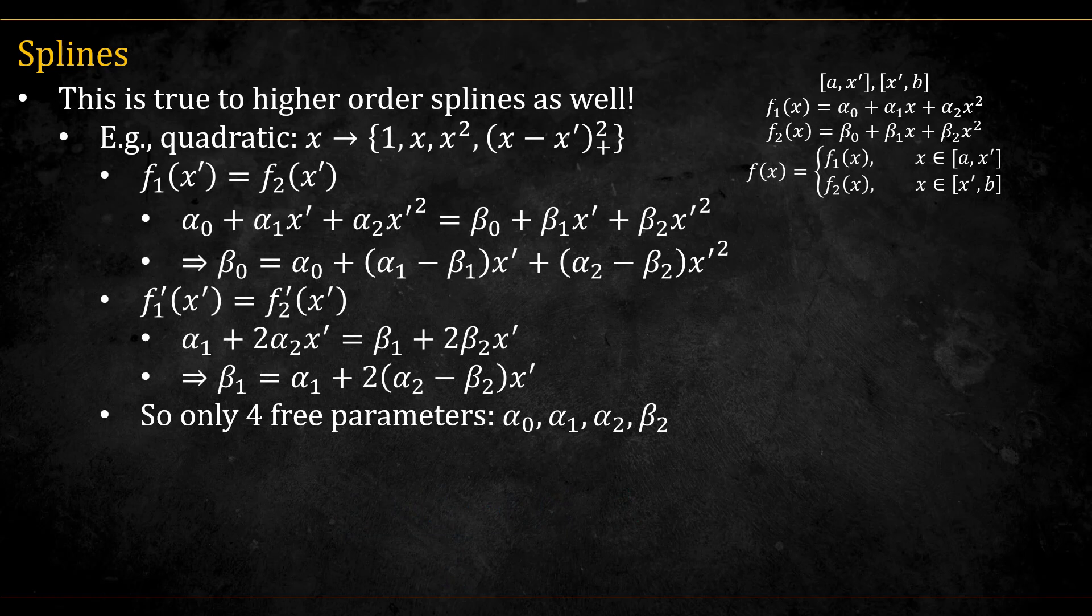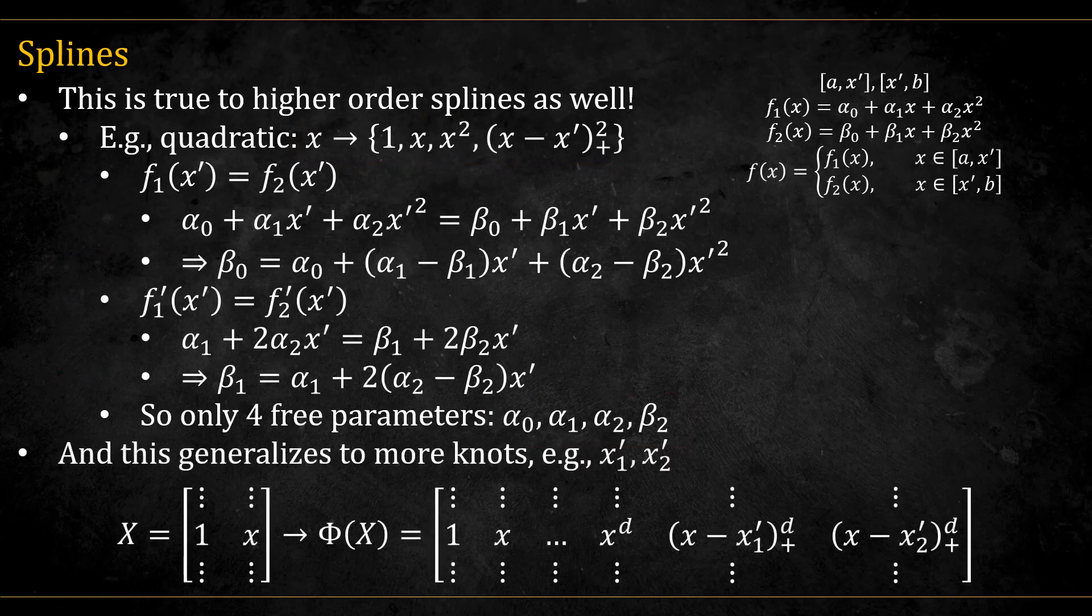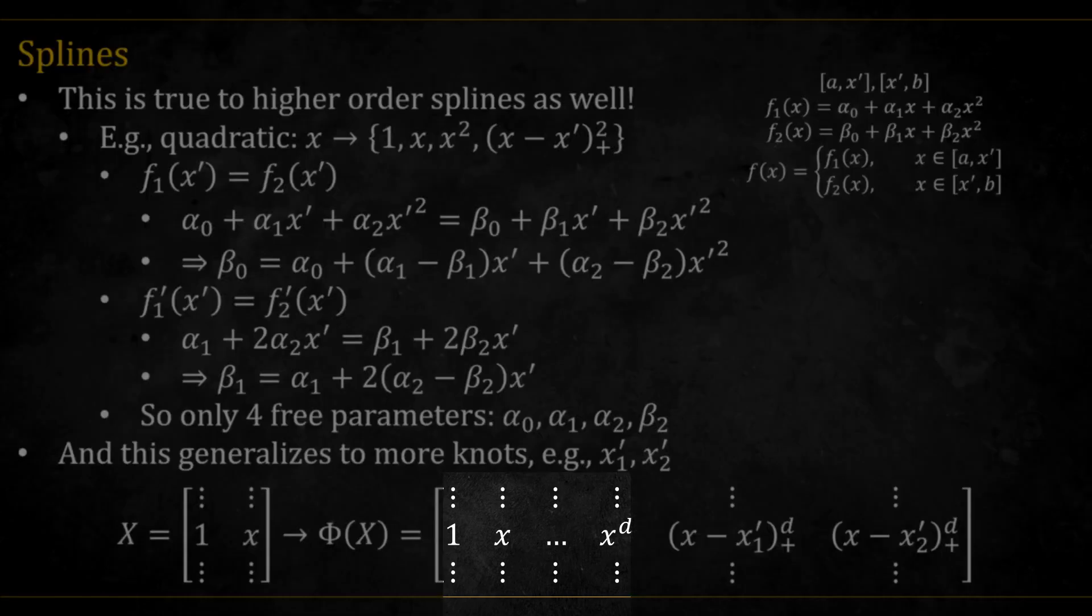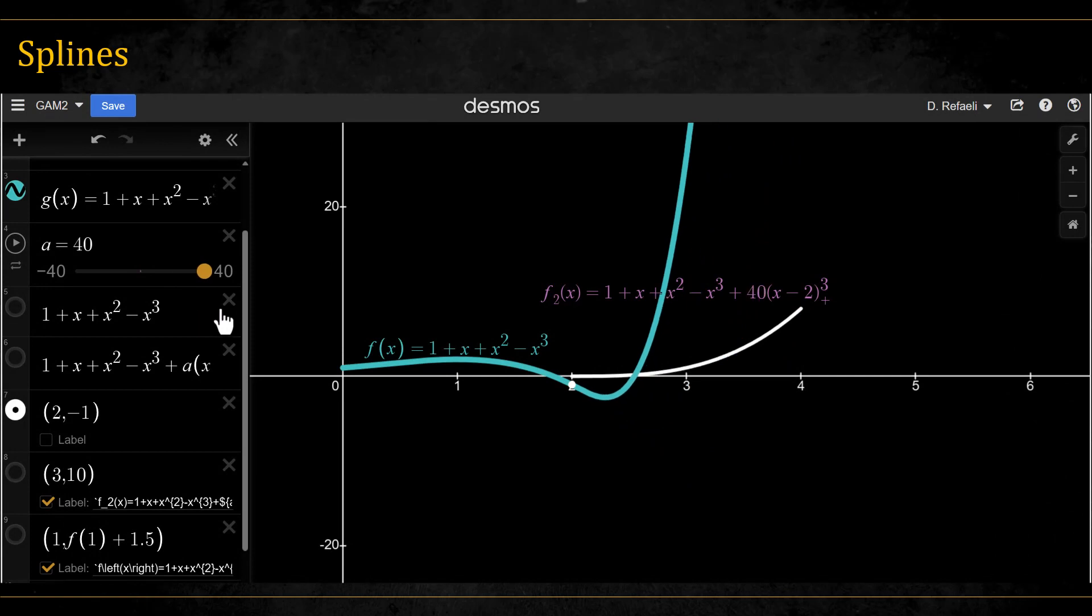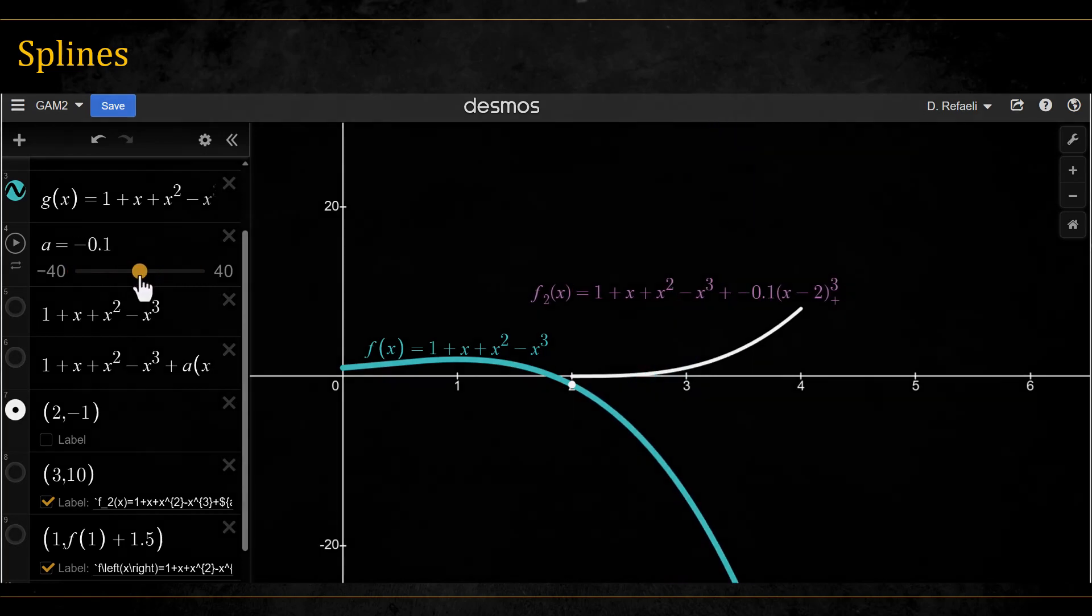This is true for higher order splines as well. For example, for a quadratic spline with one knot, we will have the following basis expansion. Notice that here, since we have two constraints, we will have two restricted parameters and only four free parameters. This also generalizes to more knots. For example, this is the matrix for a degree d polynomial with two knots. We add all the regular polynomial terms and then the knot terms with degree d. Here you can see a demonstration of a cubic spline with one knot at x equal 2. You can see that because we demand continuity of the first and second derivative, the function cannot break too much at the knot, because the function must retain a degree of smoothness.